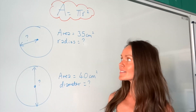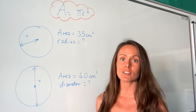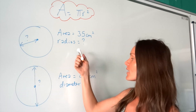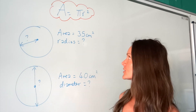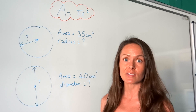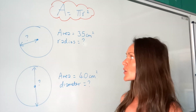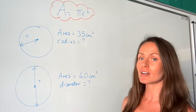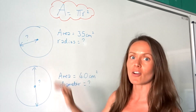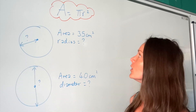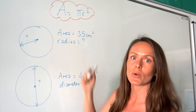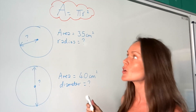Hello, so in this next video, I'm going to show you how to work out both the radius and the diameter when you are given the area of a circle. Remember, area is just the space inside the shape, inside the circle, and this is the formula to work out the area of a circle.